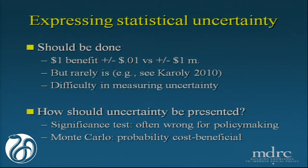Margaret mentioned some of the harder-to-measure costs, such as in-kind contributions and volunteer work — opportunity costs and so on — definitely tough stuff to think about. But the other thing that strikes me, looking at MDRC studies and more broadly, is just how little is done in trying to express statistical uncertainty about the benefit-cost results. I was struck by a paper that Lynn Carolee wrote about exactly this topic, and she noted that only three of the studies she had looked at had expressed some sort of statistical uncertainty. Even there, it seems like it's pretty rare.